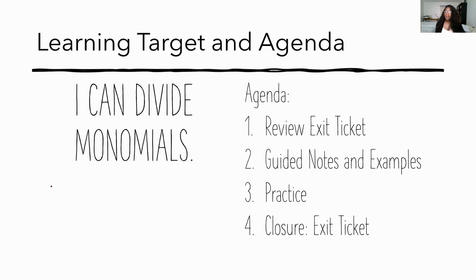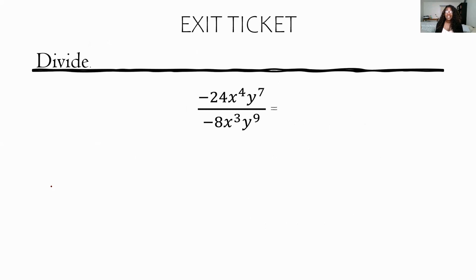That was today's lesson on dividing monomials. You might need a little extra practice or a review of the properties of exponents — that's perfectly fine. We reviewed the exit ticket from last time on multiplying monomials, went through guided notes and examples, and did some practice. For today's exit ticket: solve negative 24x⁴y⁷ over negative 8x³y⁹. Give it a try!